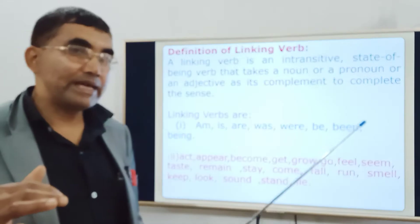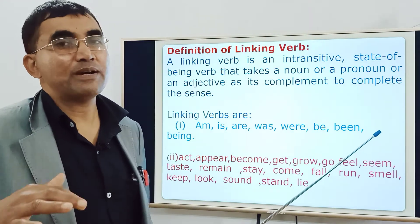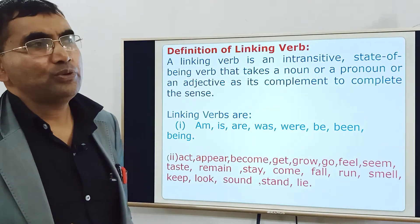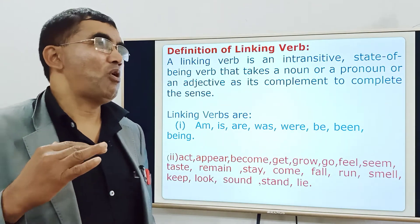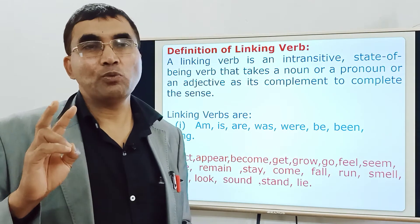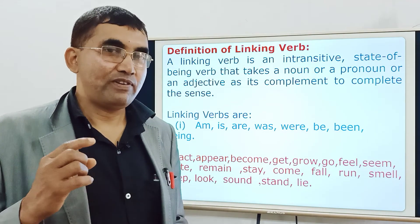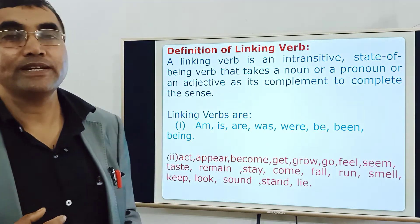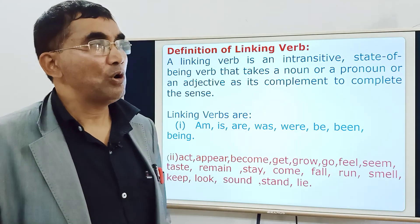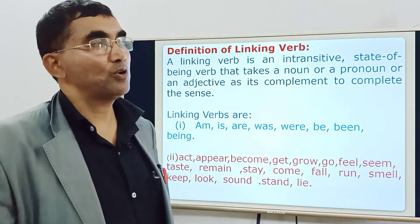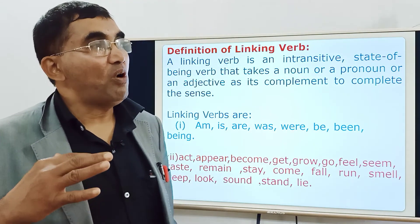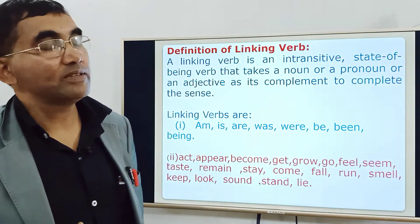A state of being verb means it will just denote some state, not any action. If we analyze all English verbs, we will see they can be categorized under two main categories. The first is action verbs and the second is state of being verbs. Action verbs express some type of action — for example: 'he plays football,' 'the boy is running,' 'the man is walking in the field.'